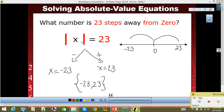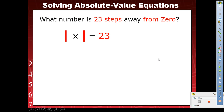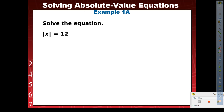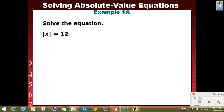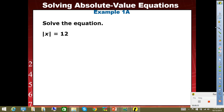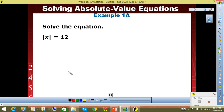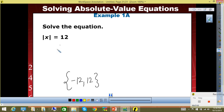Example 1A: solve the equation — absolute value of X equals 12. Write your answer as a solution set. The solution set is negative 12, 12. At this point we know there's going to be one negative answer and one positive answer.